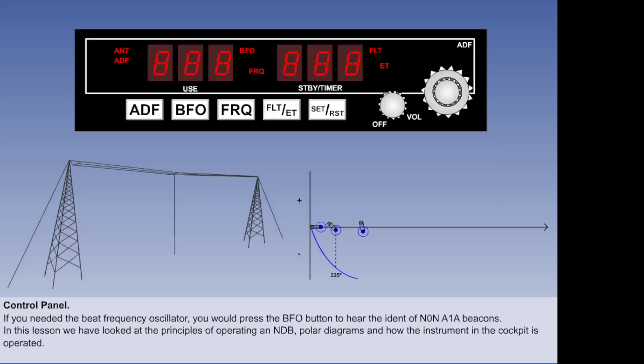In this lesson, we have looked at the principles of operating an NDB, polar diagrams, and how the instrument in the cockpit is operated. In the next lesson, we look at how to interpret the ADF.